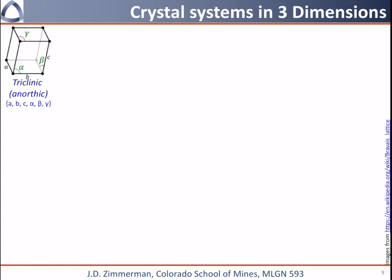Crystal systems and Bravais lattices in 3 dimensions are more complex because we have three translation vectors — A, B, and C — and three angles describing how they're related to each other. The lowest symmetry system is the triclinic, also called the anorthic system, denoted with A, B, C, alpha, beta, gamma in curly brackets. Alpha is opposite the lattice direction A and lies between lattice translation vectors B and C; similar rules apply for beta and gamma. The next lowest symmetry is the monoclinic system, where A, B, and C are unequal, alpha and gamma are 90 degrees, but beta is some irrational number, typically larger than 90 degrees.